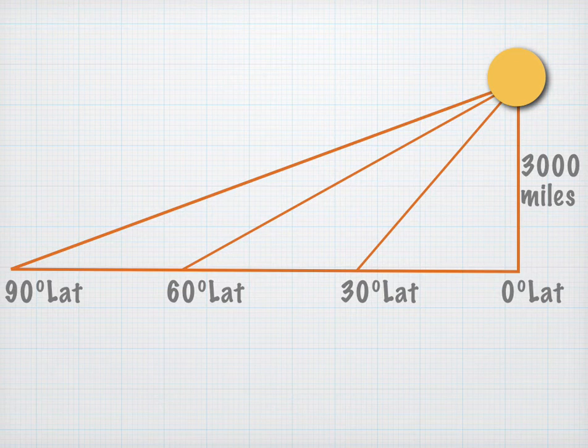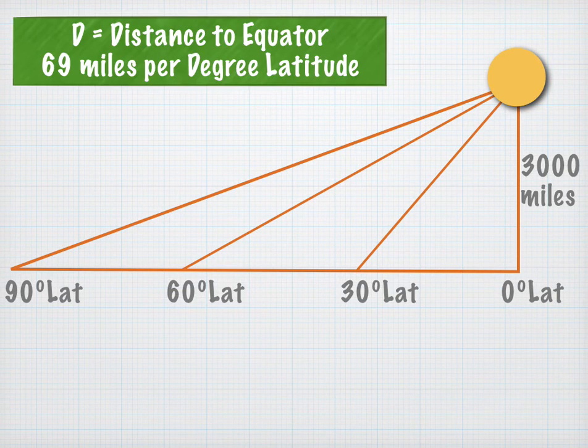And the question is, how are we going to find their angles of elevation towards the sun? Well, we need distance. And we need the distance to the equator. And a good shortcut is to use 69 miles per degree of latitude.